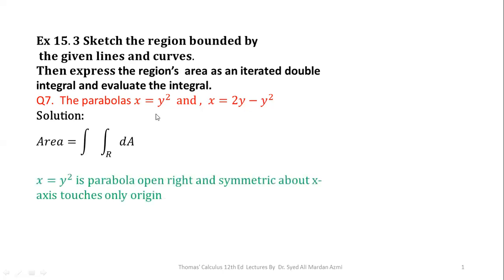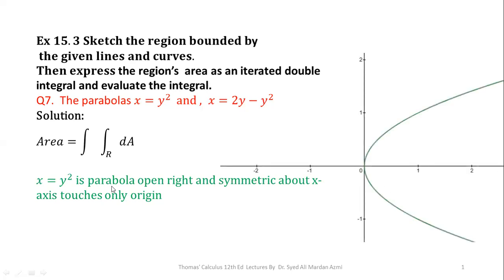The curve x = y² is a parabola which opens rightward. It is symmetric about the x-axis and touches only the origin. This is a standard parabola, and its graph looks like this.